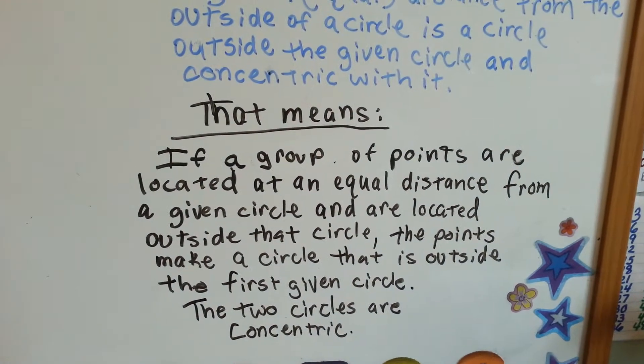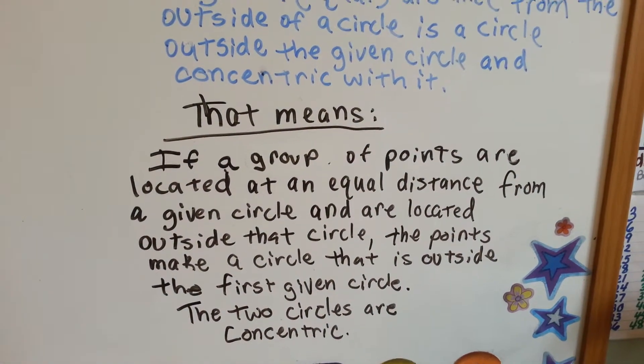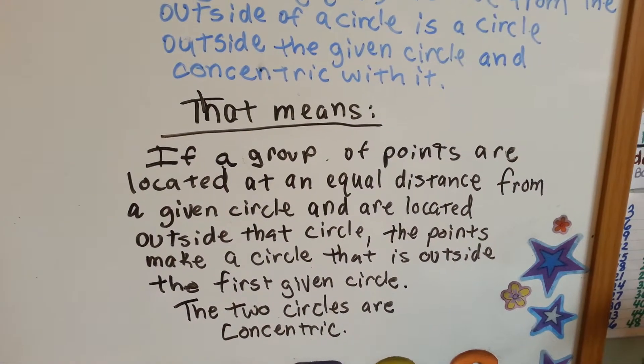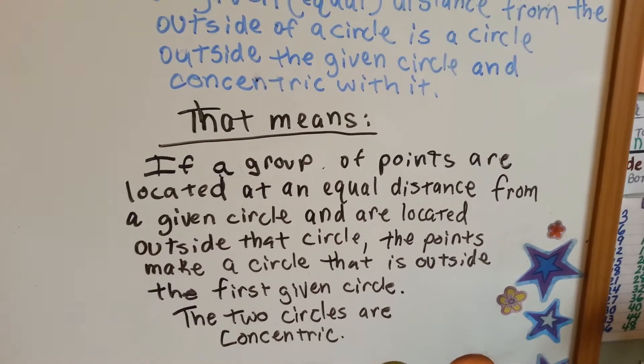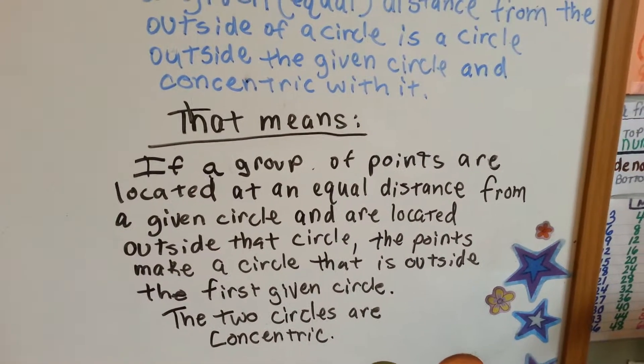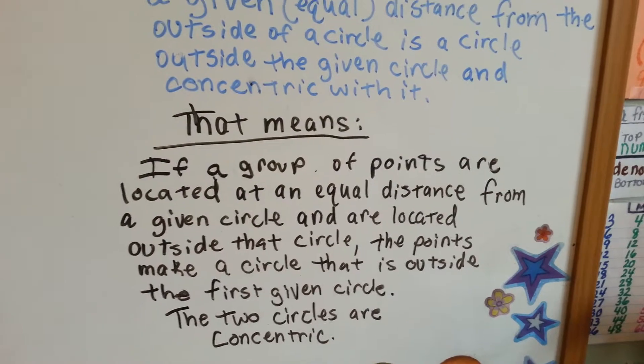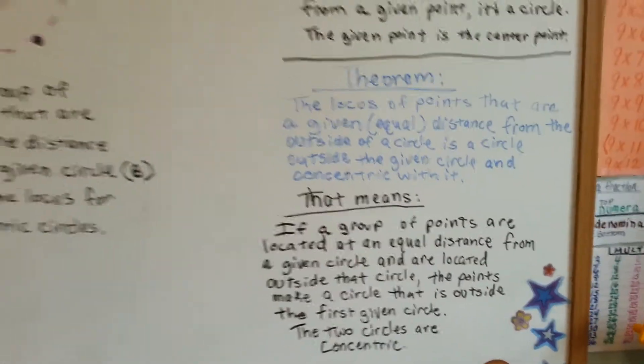if a group of points that are located at an equal distance from a given circle and are located outside that circle, the points make a circle that is outside the first given circle, and the two are concentric. So,